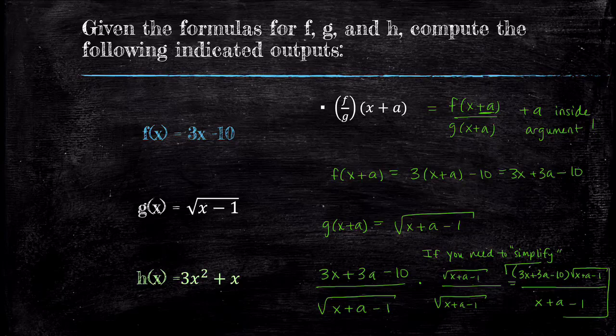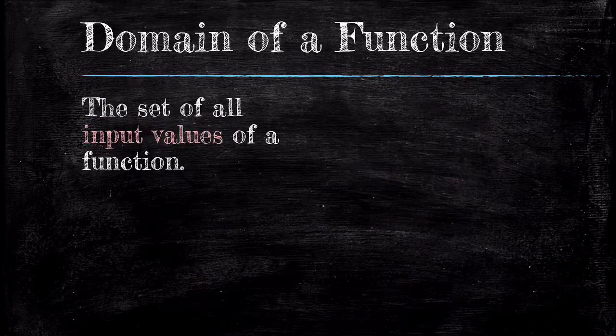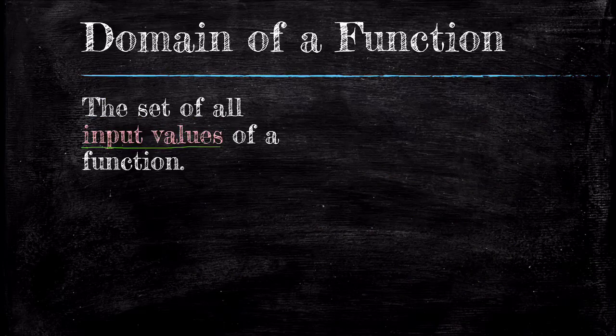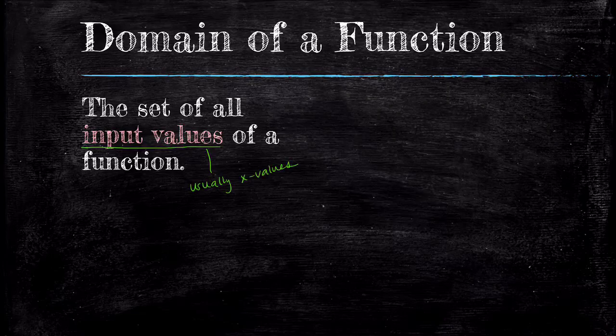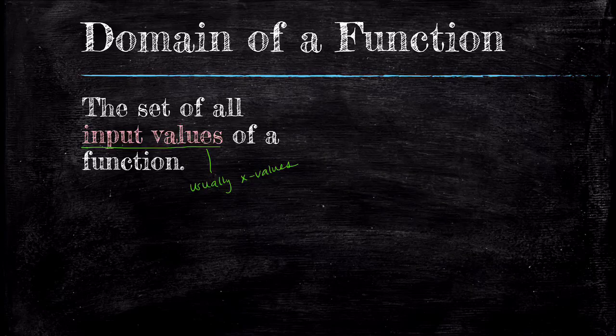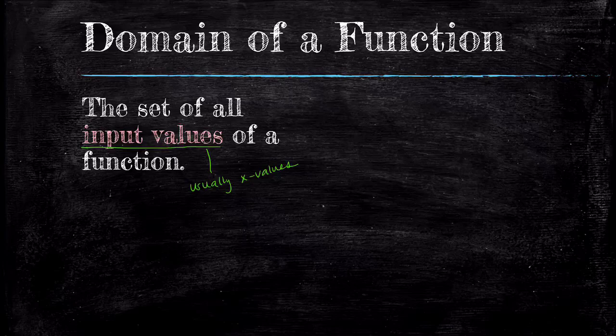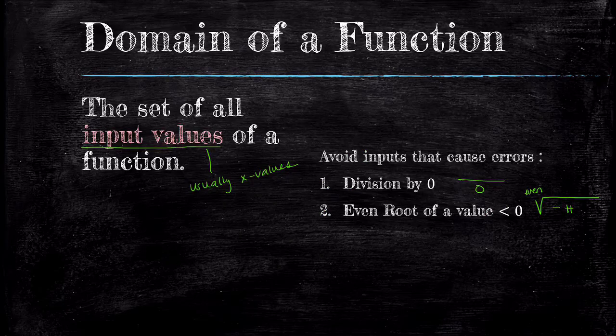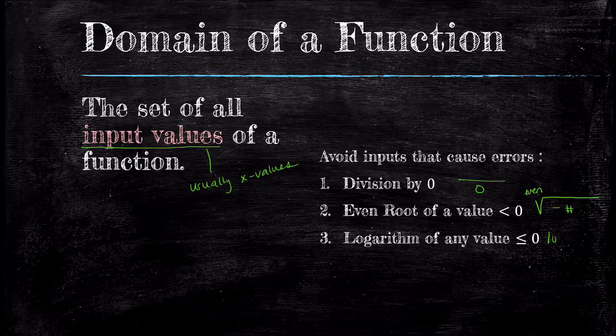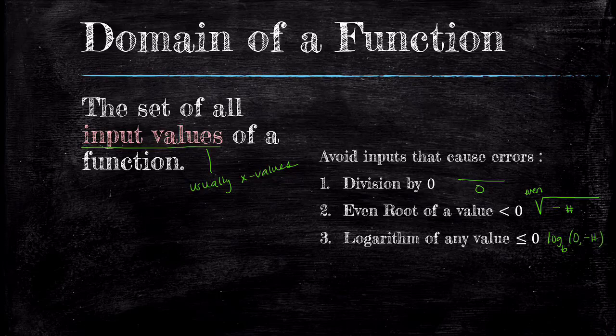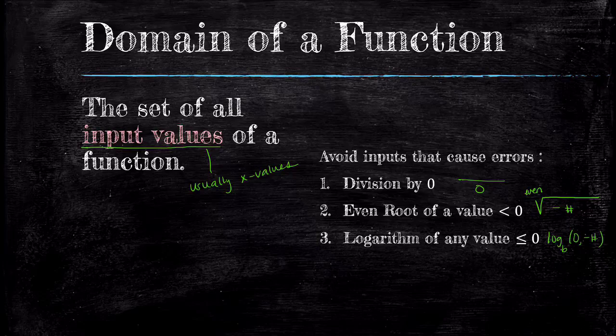Now let's talk about inputs. The domain of a function is the set of all input values of a function, typically x values. You may think we can plug in whatever we want, but that's not always the case. It depends on the function formula. Here are the errors we want to avoid: First, division by zero. Second, the even root of a negative number. Third, taking the logarithm of zero or a negative number. We will approach this systematically by working our way down this list.